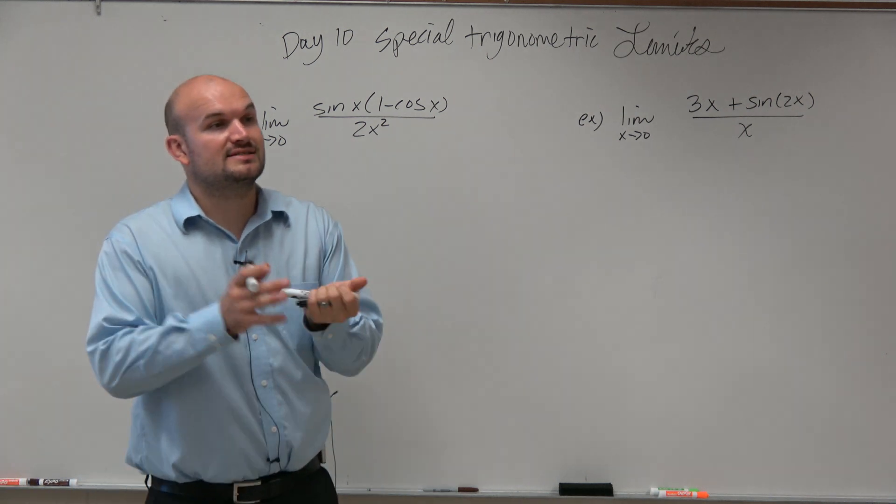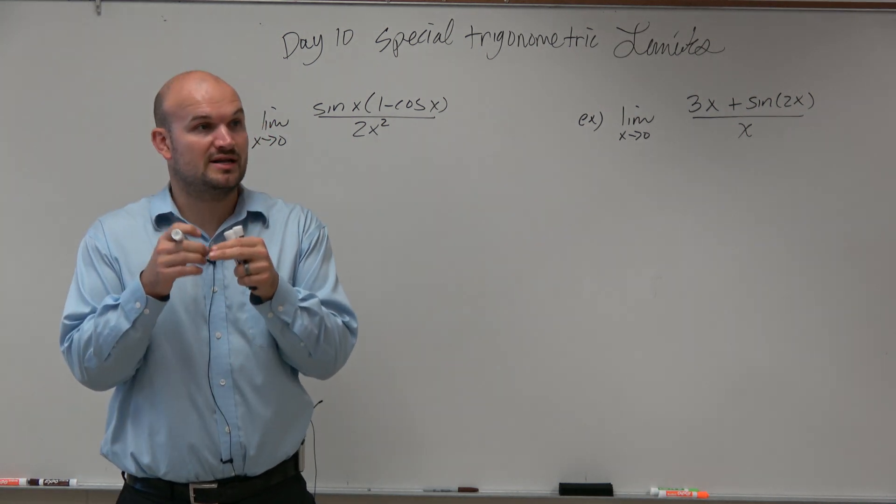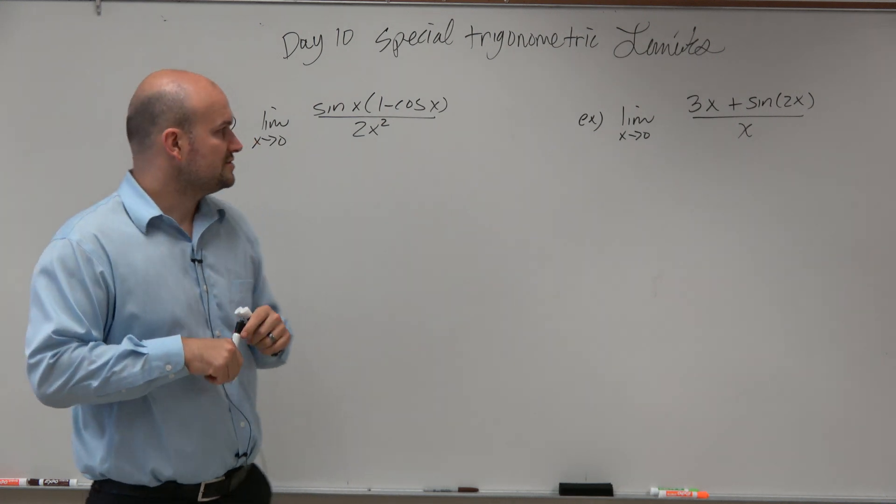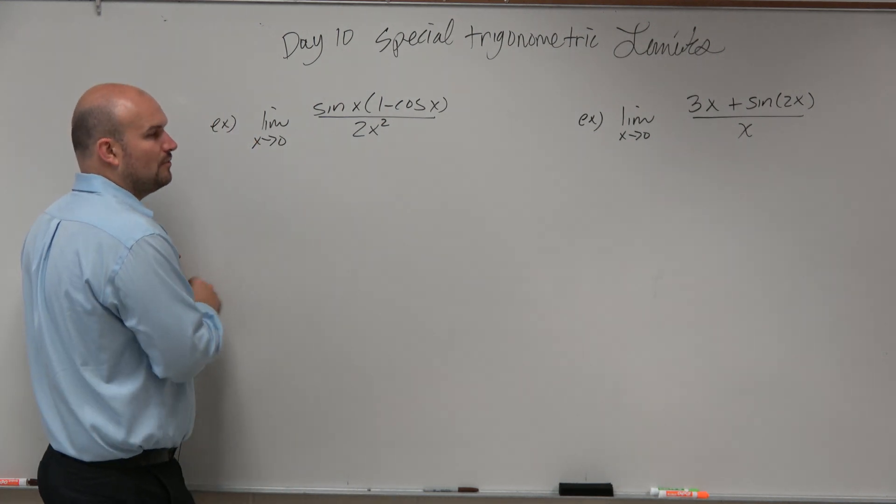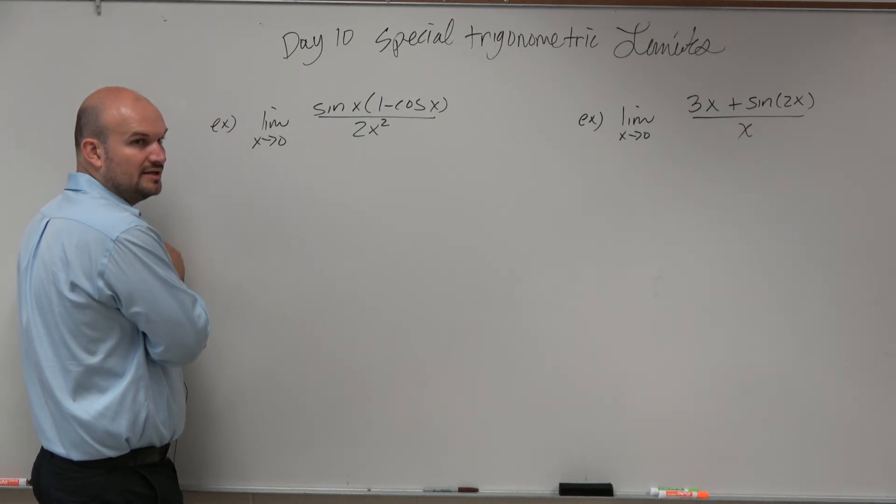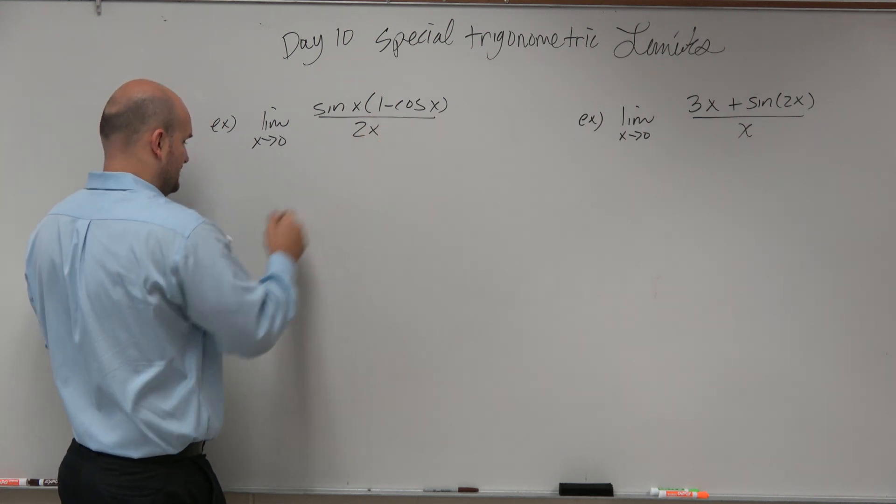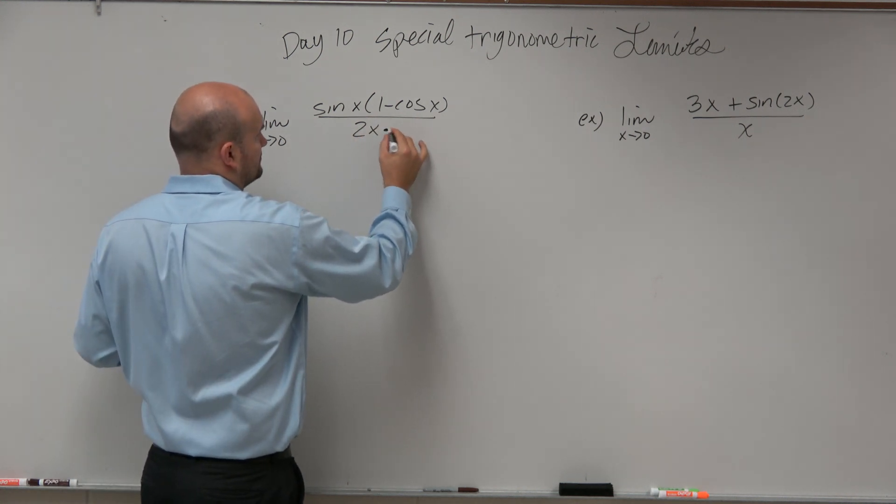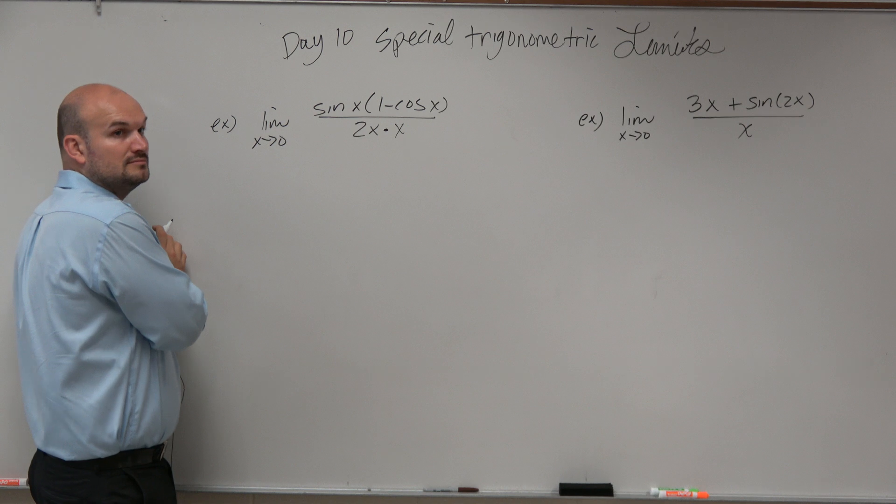The second thing is we want to get sine of x over x and 1 minus cosine of x over x, either one of the two or both. So let's look at some manipulation. Well, I can rewrite 2x squared, can't I? I can rewrite that as 2x times x. Yes?